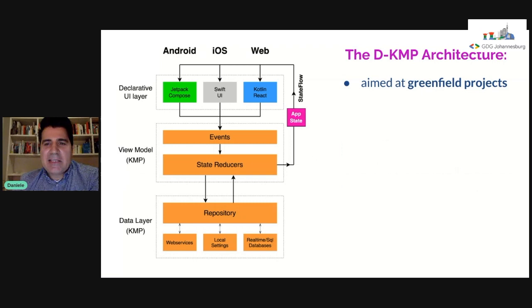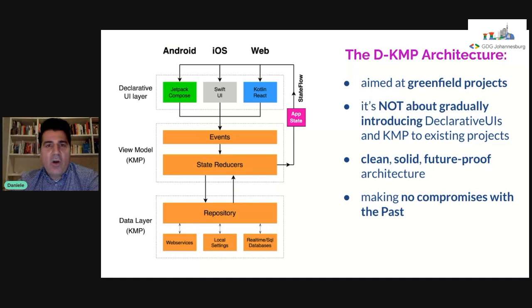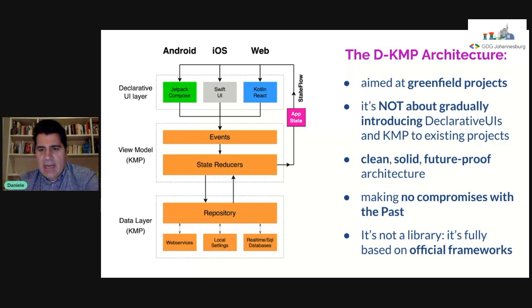One important assumption: the DKMP architecture is aimed at greenfield projects. Our architecture is not about gradually introducing declarative UIs and KMP to existing projects, but about providing a clean, solid, and future-proof architecture which makes no compromises with the past.